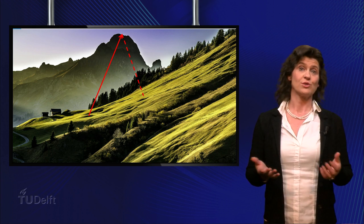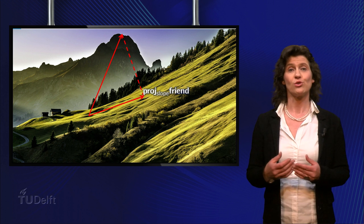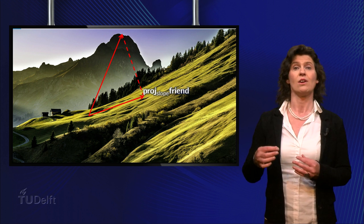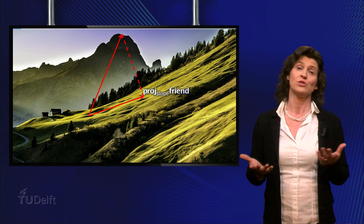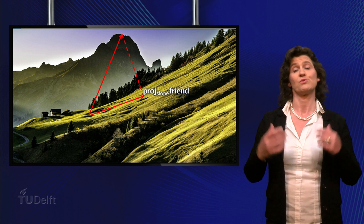So the answer to the problem we started this video with is that you have to stand on the endpoint of the orthogonal projection of your friend onto the slope of the mountain, given that you know the coordinates of two orthogonal vectors that form a basis for this slope.